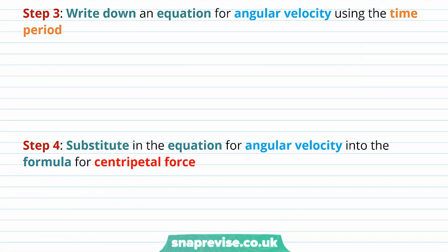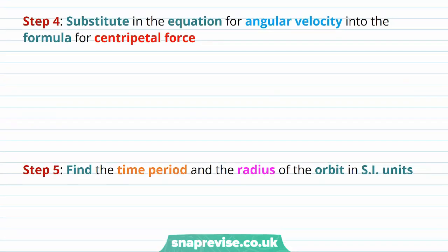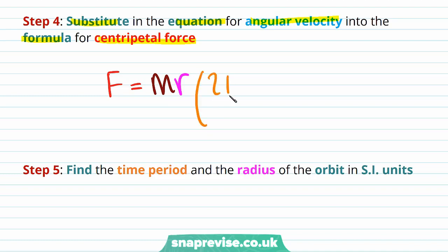Step 3 is to write down an equation for angular velocity using the time period. Angular velocity is equal to 2π divided by the time period. Step 4 is to substitute in the equation for angular velocity into the formula for centripetal force. So centripetal force is equal to mass times radius R times this expression for omega all squared, which is 2π divided by T, all squared.